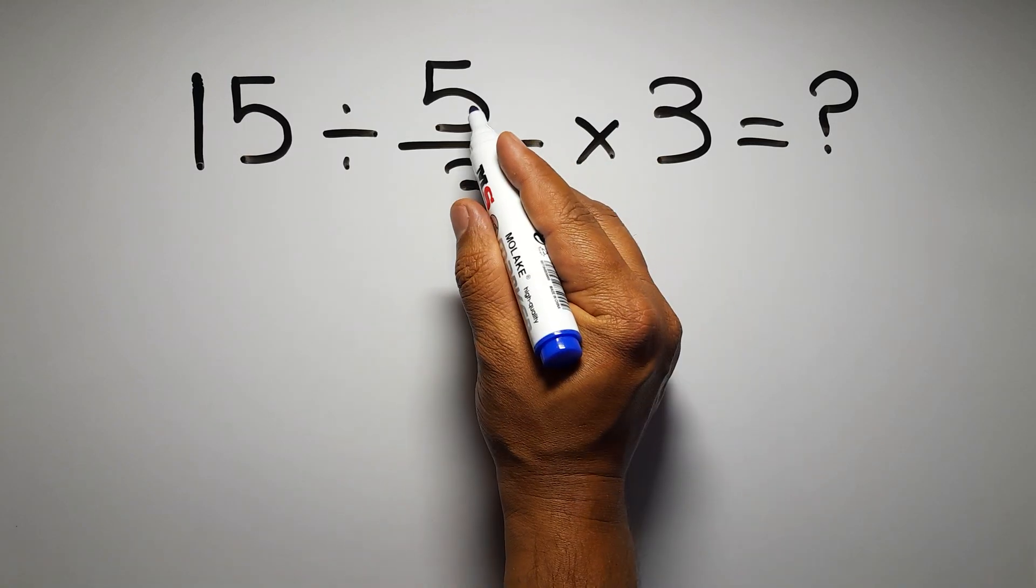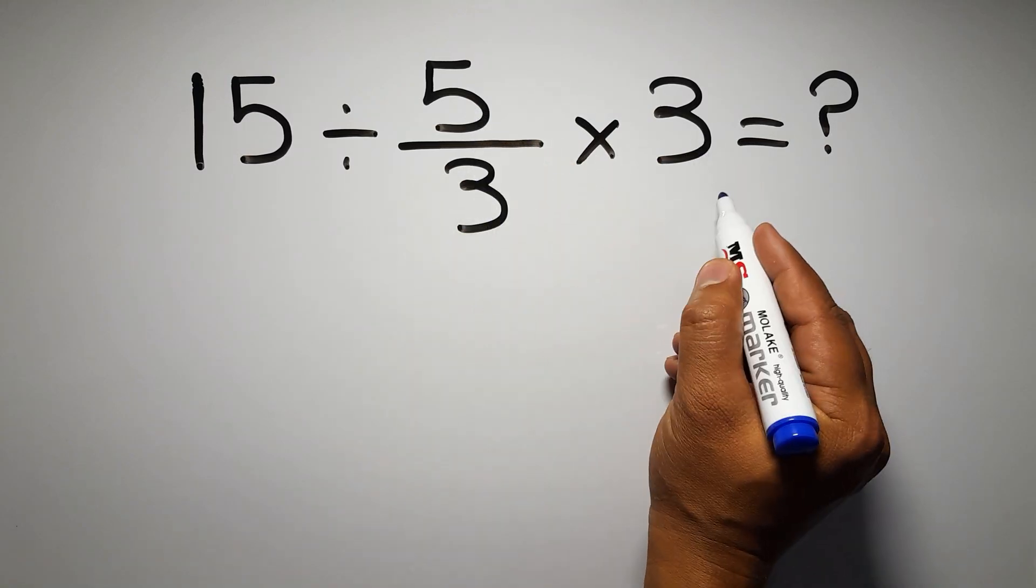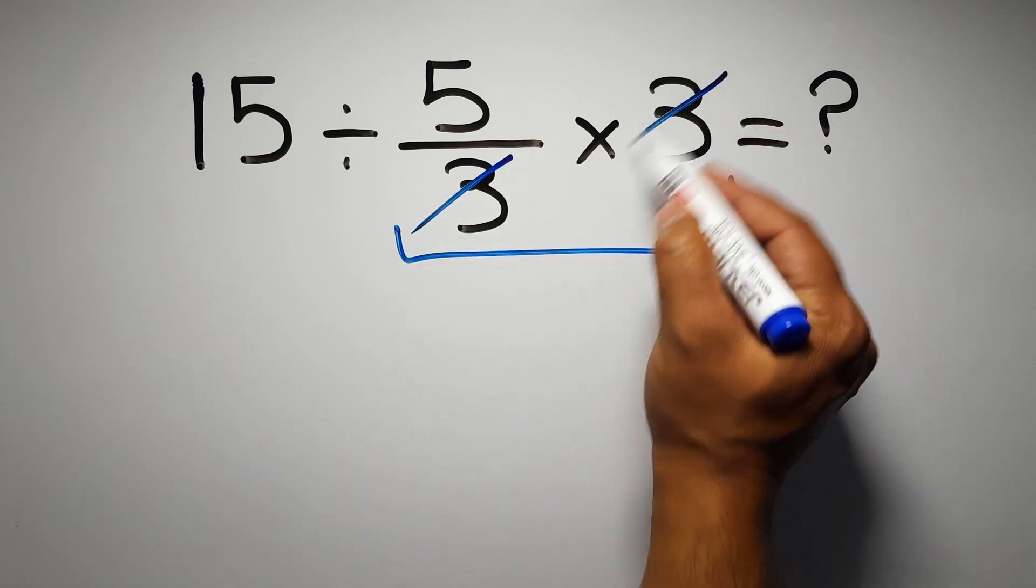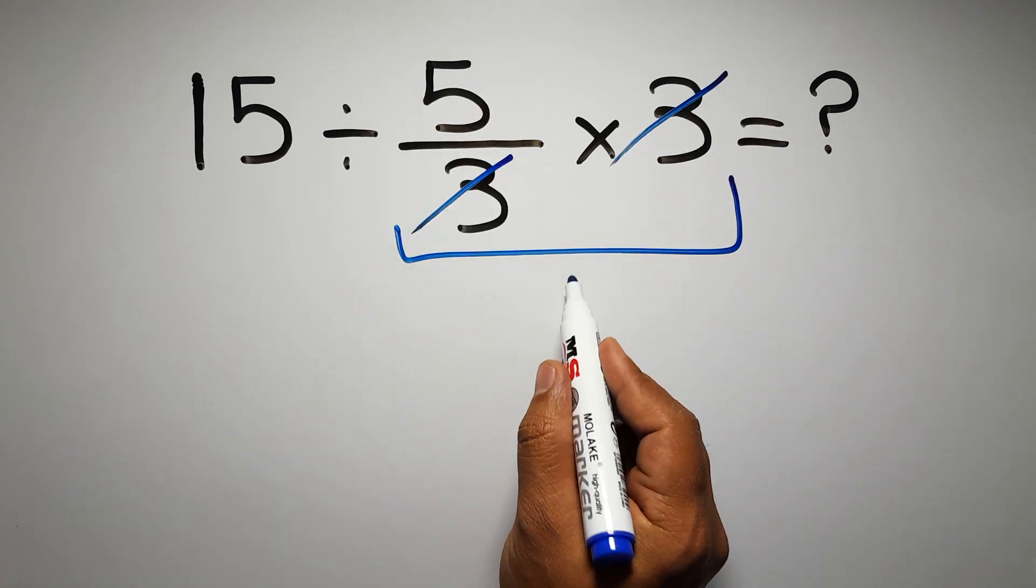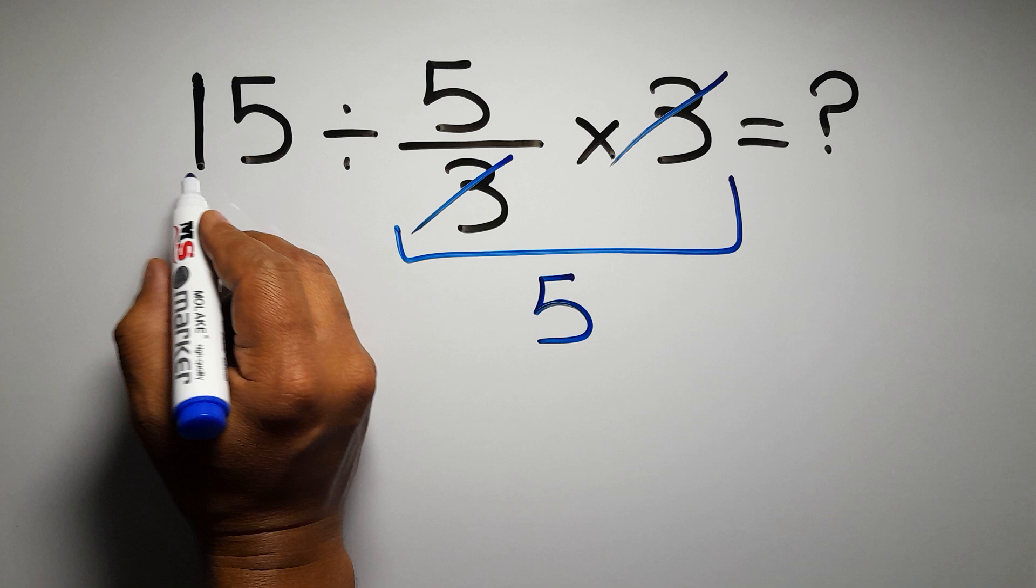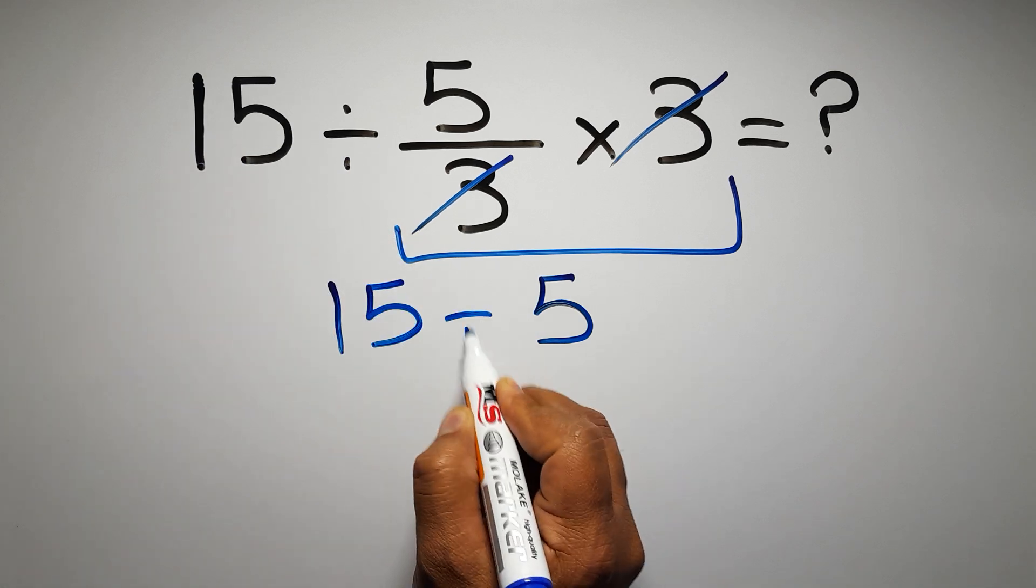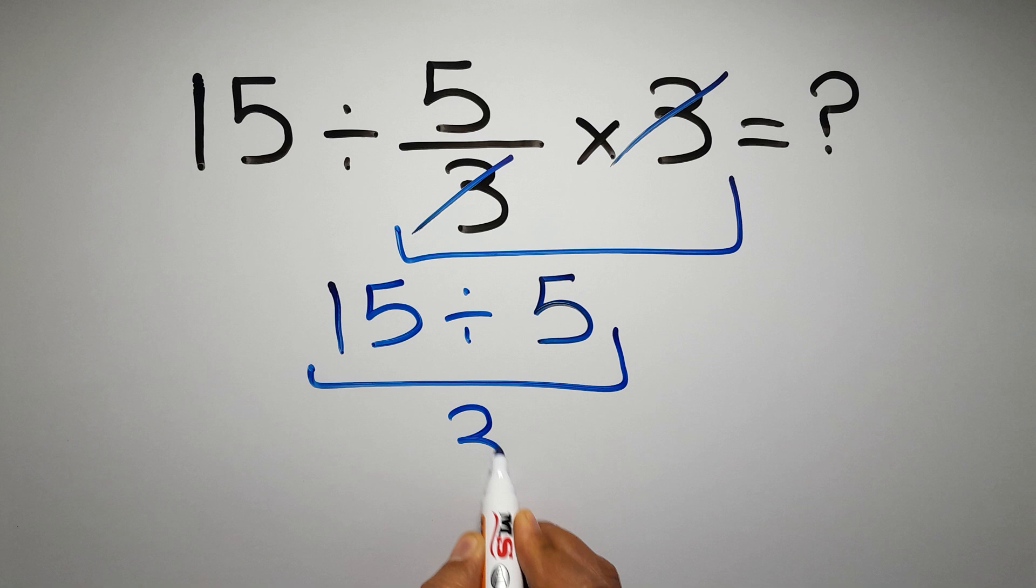First we do this multiplication, 5 over 3 times 3. We can easily cancel this 3 and this 3, so we have just 5, and 15 divided by 5 which equals 3. But this answer is not correct.